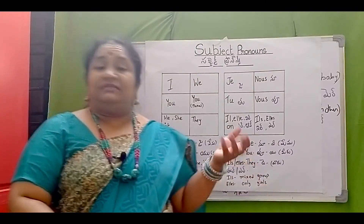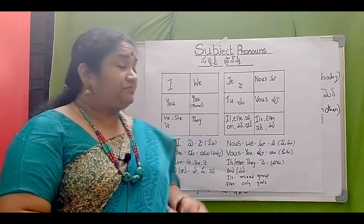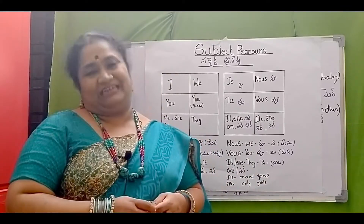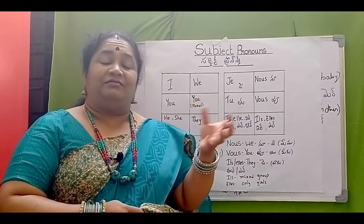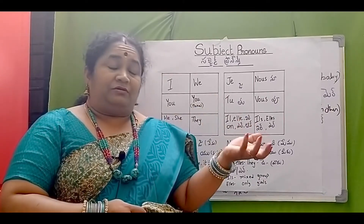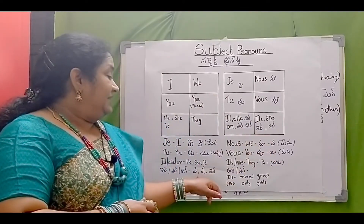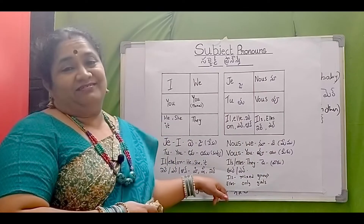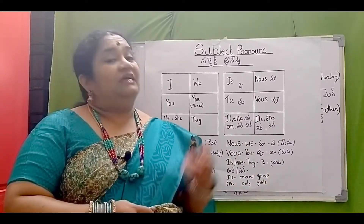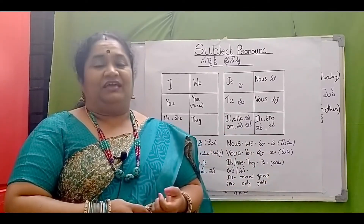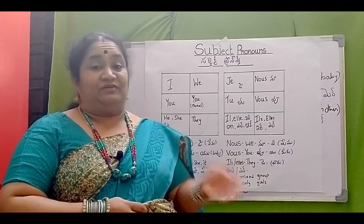In French, gender is very important — every object has a gender attached to it. When an object has masculine gender, we say il. When it is feminine, we say elle.